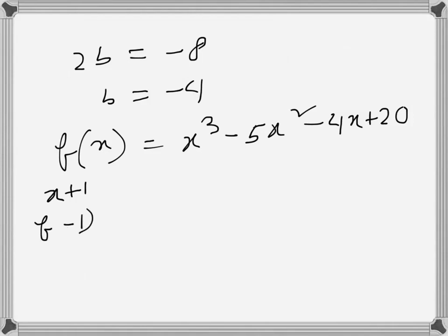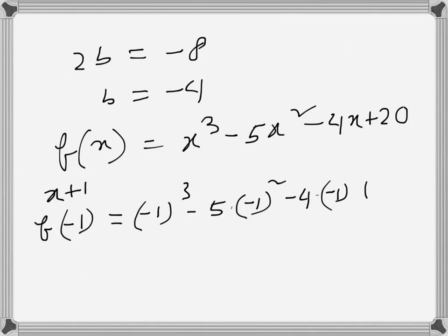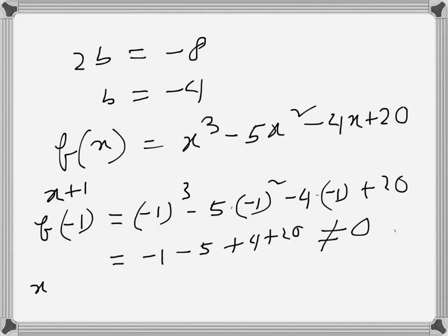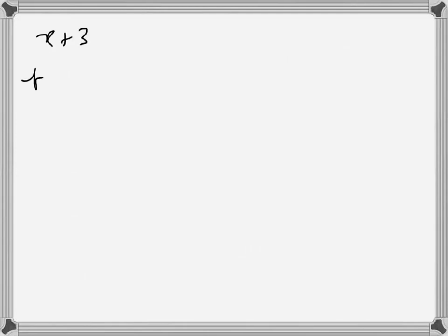We try x+1 as the third factor. f(-1) = (-1)³ - 5(-1)² - 4(-1) + 20 = -1 - 5 + 4 + 20, which is not 0, so x+1 is not a factor. Then we try f(1) = 1 - 5 - 4 + 20, which is also not 0, so x-1 is not a factor either.